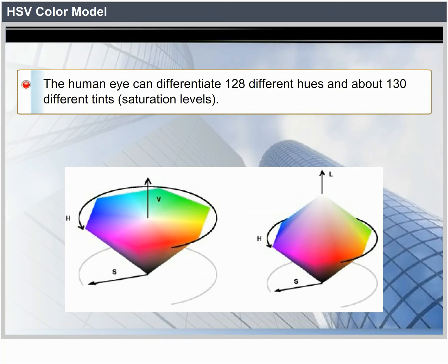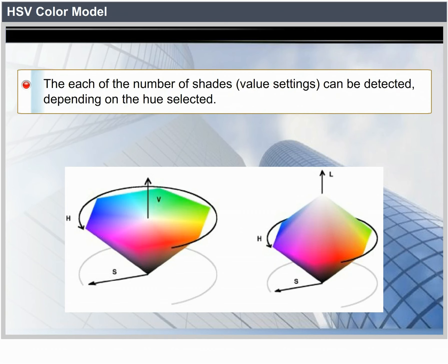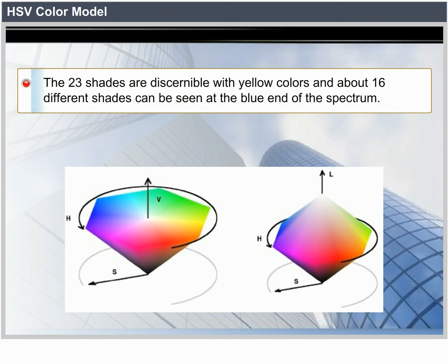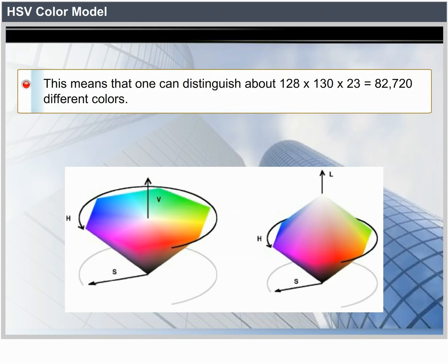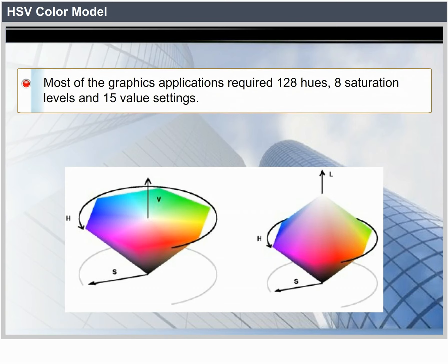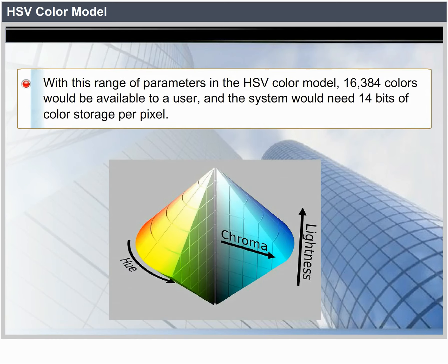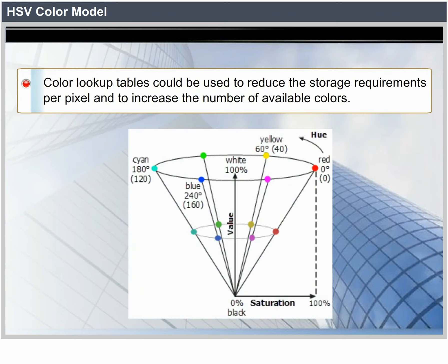The human eye can distinguish about 128 different hues and about 130 different saturation levels. For each of these, a number of shades can be detected depending on the hue selected — about 23 shades are discernible with yellow colors and about 16 different shades at the blue end of the spectrum. This means we can distinguish about 128 × 130 × 23 = 382,720 different colors. For most graphics applications, 128 hues, 8 saturation levels, and 15 value settings are sufficient. With this range in the HSV model, 16,384 colors would be available and the system would need 14 bits of color storage per pixel. Color lookup tables could reduce storage requirements and increase available colors.